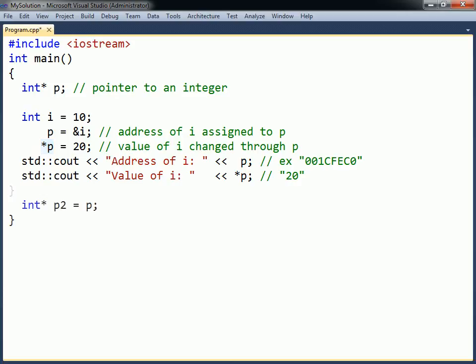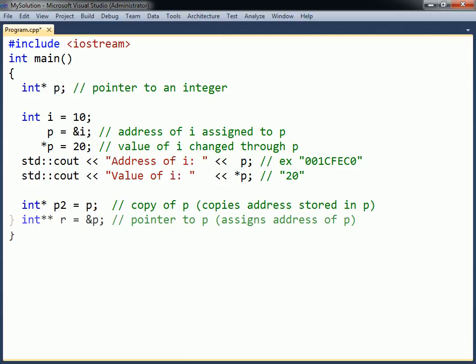If a second pointer is created and assigned the value of the first pointer, it will get a copy of the first pointer's memory address. A pointer can also point to another pointer. This is done by declaring a pointer with two asterisks, and then assigning it the address of the pointer that it will reference. This way, when the address stored in the first pointer changes, the second pointer can follow that change.